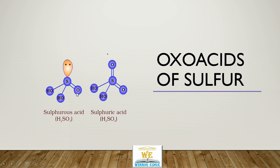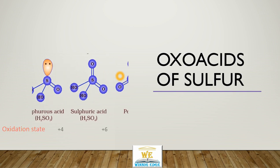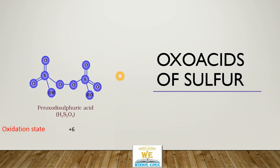The oxidation state of sulphur in sulphurous acid is plus 4. For sulphuric acid H2SO4, there are two double-bonded oxygens (each minus 2) and two hydroxyl oxygens (each minus 1), giving an oxidation state of plus 6 for Sulphur — the maximum possible oxidation state for Sulphur.